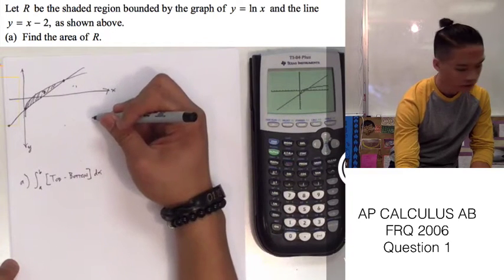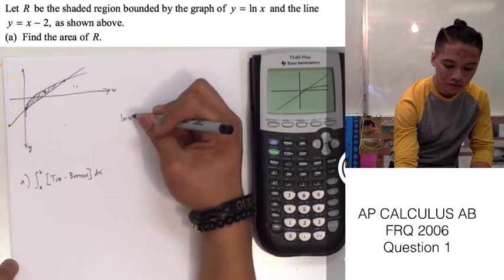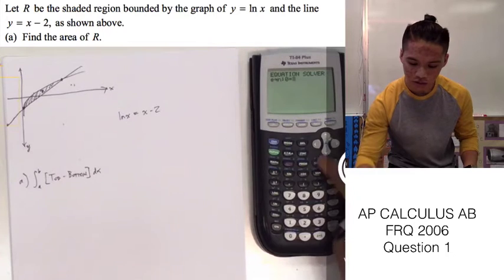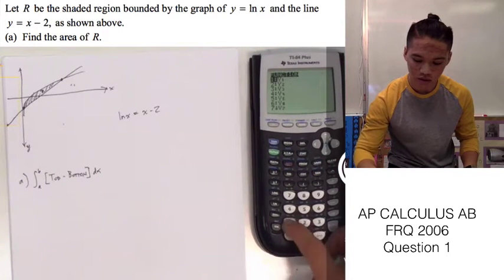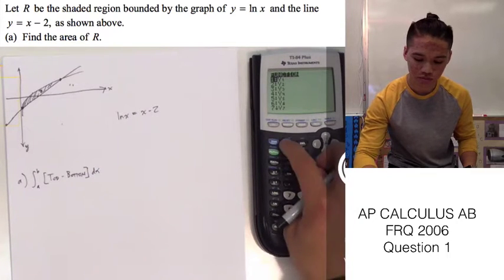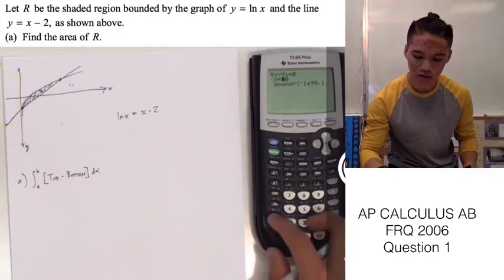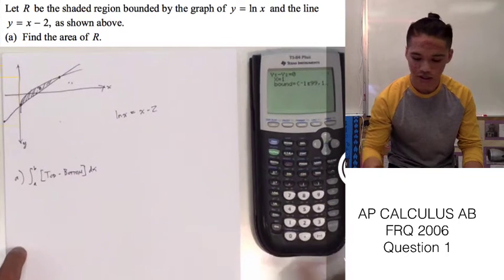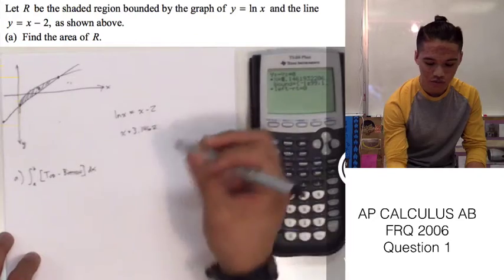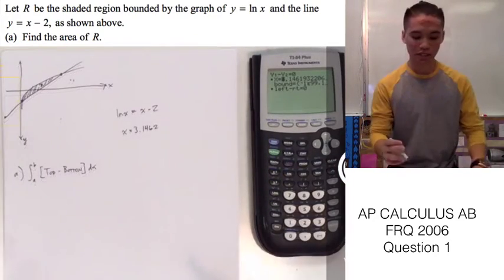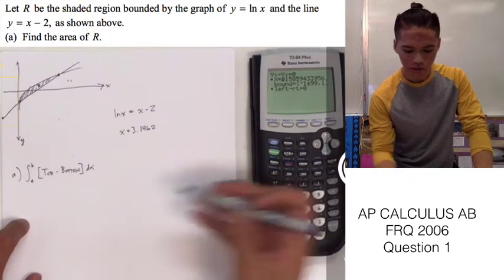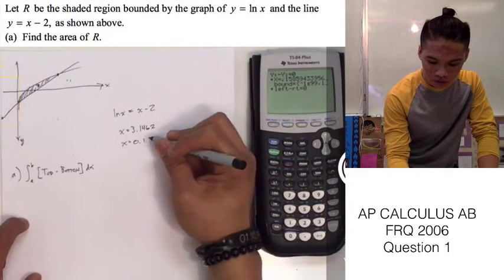To find the intersections, we're just going to equate the two: ln of x equals x minus 2. To do this we'll use our calculator — we can set Y1 equal to ln of x and subtract Y2. We can see it's around 1, so let's guess around 1. Our first point of intersection is 3.1462. For the second point, since it's less than 3.1462, let's put in a value of 0, and we get our second point of intersection: 0.1586.